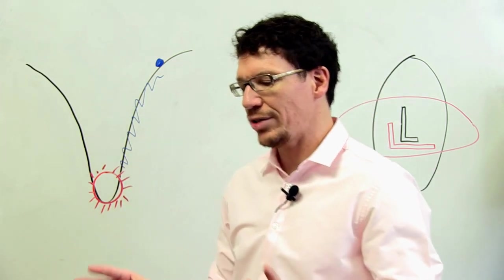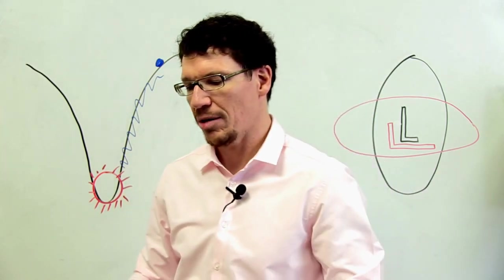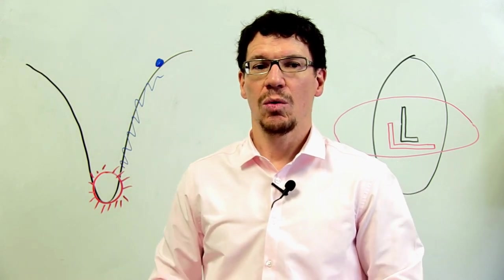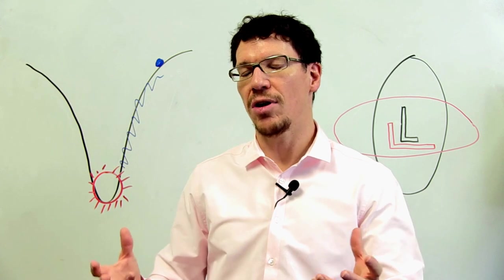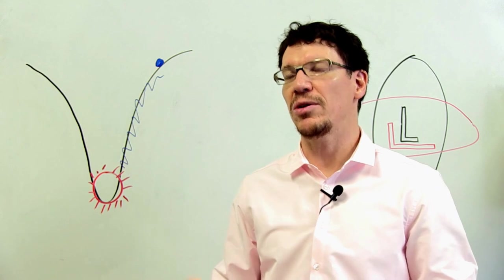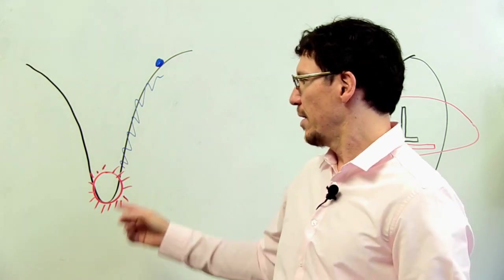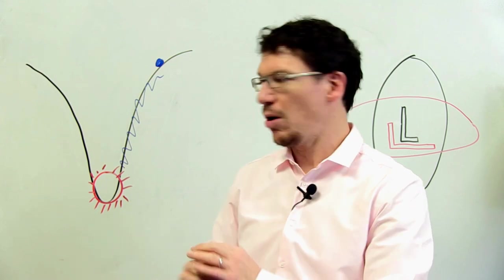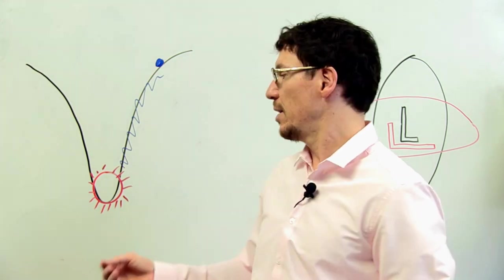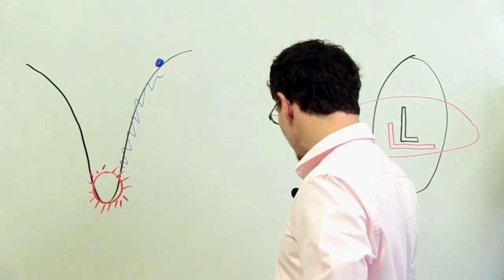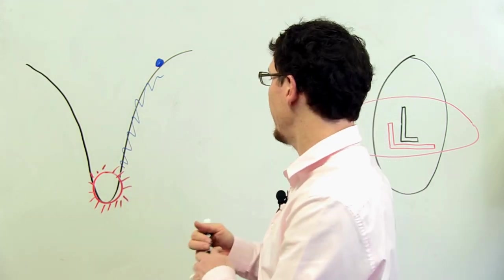But what was actually detected by this LIGO experiment last week was the infall and merger of two black holes. Now what does that mean? So these two black holes were each about 30 times the mass of the sun. They're actually a lot smaller because black holes are very, very small although they're very massive. So imagine taking two objects that are tiny but 30 times as heavy as the sun.